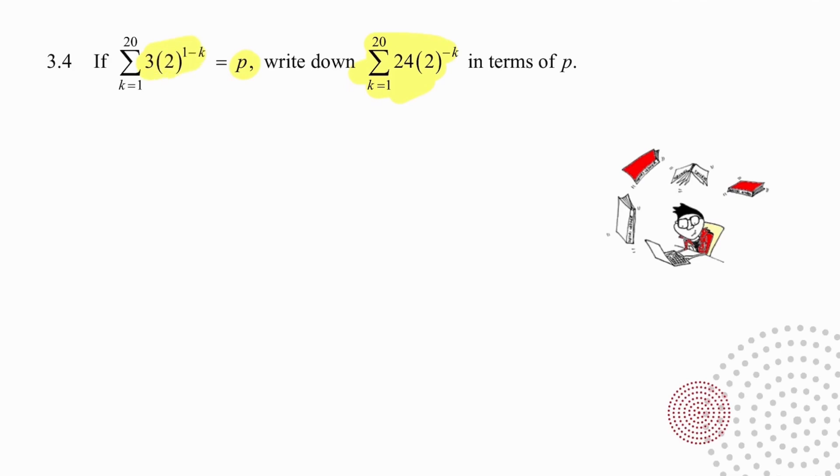So we're going to start by taking the value on the left and writing it slightly differently. So on the left we have 3 times 2 to the power of 1 times 2 to the minus k. On the right we have 24 times 2 to the minus k.